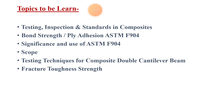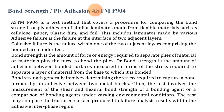ASTM F904 is a test method that covers a procedure for comparing the bond strength or ply addition of similar laminates made from flexible materials such as cellulose paper, plastic film, and foil. This includes laminates made by various adhesive processes.